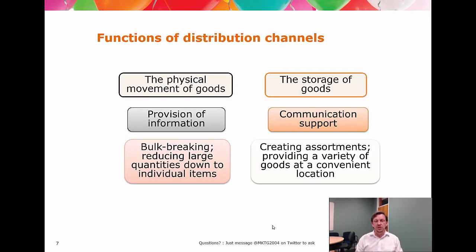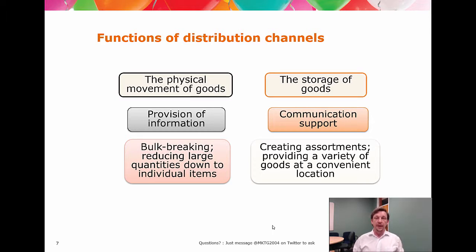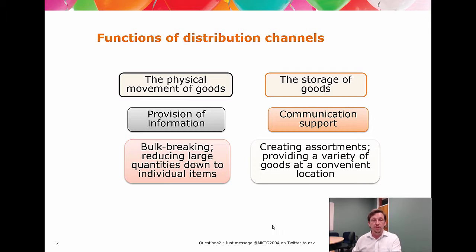Let's talk about what we do with the distribution channel and why they matter. First and foremost, it's the physical movement of goods from point A to point B — from production to consumption. The distribution channel may also alter the construction of the consumption environment. Thinking back to services marketing and the idea of co-creation, the distribution channel becomes an important factor in how we co-create and locate our service and our audience in the same position. Distribution can be about movement of goods on one side, and movement of consumers to the point of service consumption on the other.